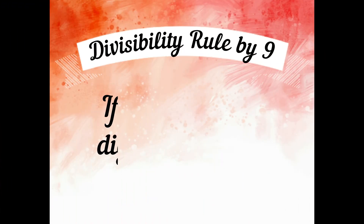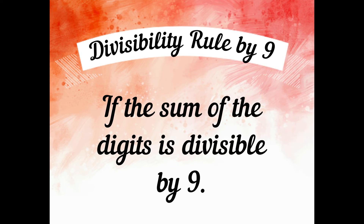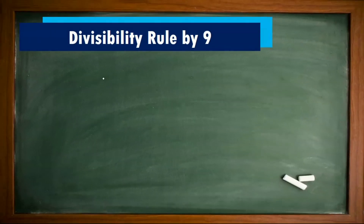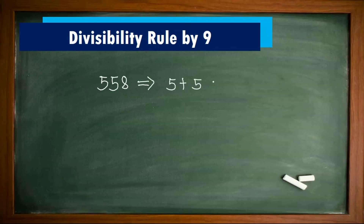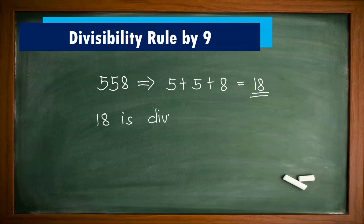Divisibility rule by 9: A number is divisible by 9 if the sum of the digits is divisible by 9. For 558, if we add the digits: 5 plus 5 plus 8 equals 18. 18 is divisible by 9, since 9 is a factor of 18 — that is, 9 times 2 equals 18.